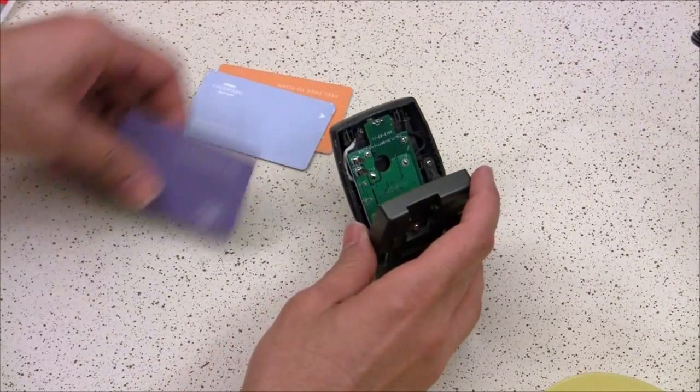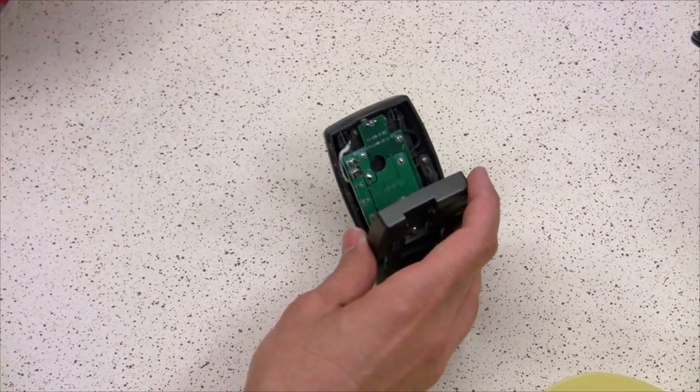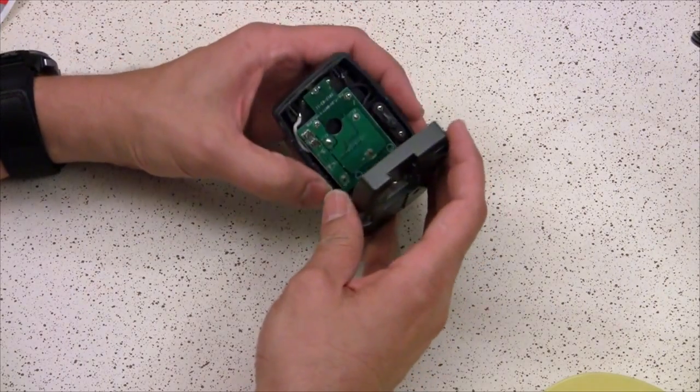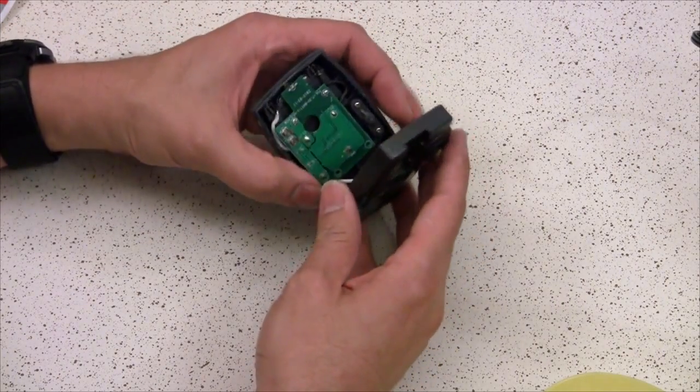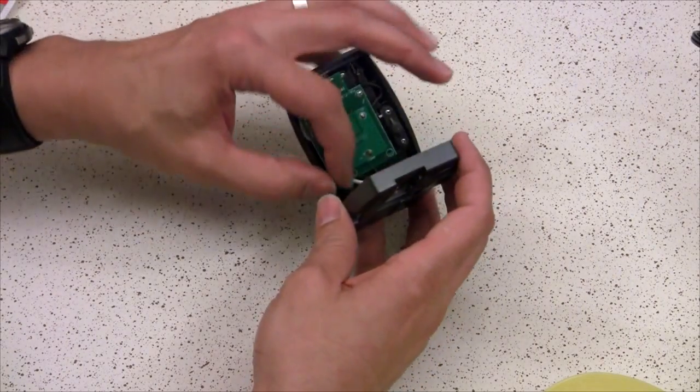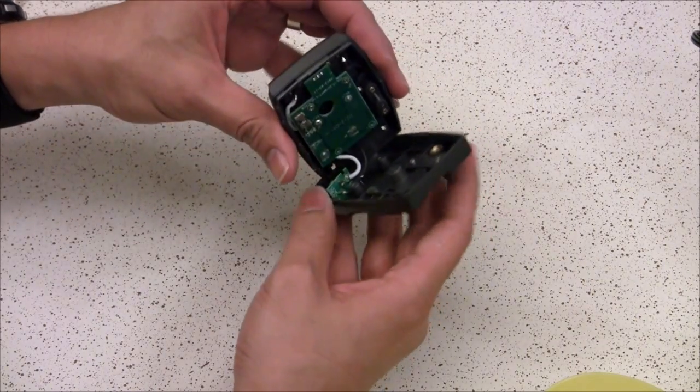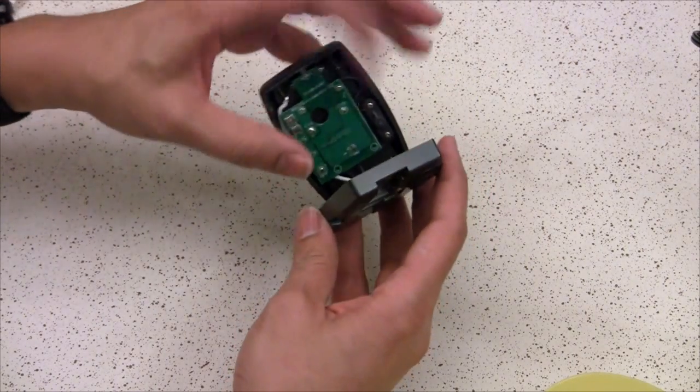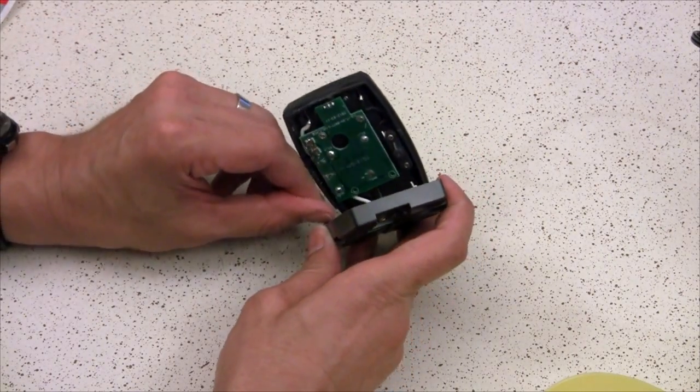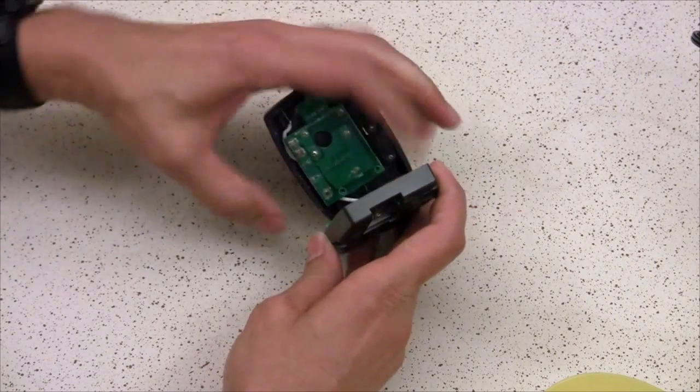Once you have the case apart, you then need to work out the power connector. It's connected to a little circuit board right there. You just need to work it out with your thumb. It's not screwed in, but you need to work it out and it will pop out.